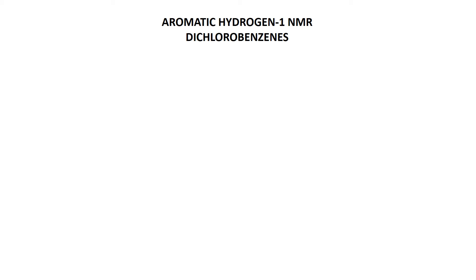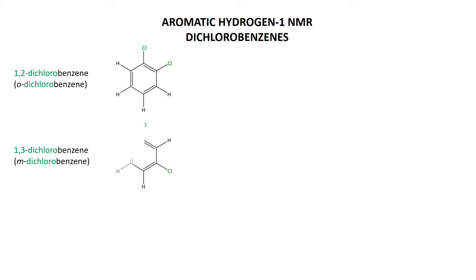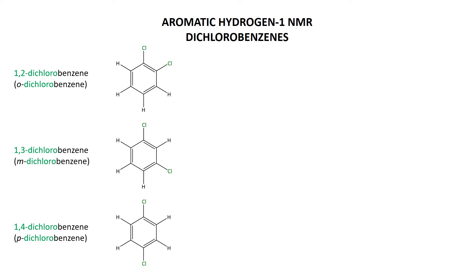Let's think about dichlorobenzene and do some predictions first. You've got 1,2-dichlorobenzene, otherwise known as orthodichlorobenzene. We can also have 1,3 or metadichlorobenzene, and then 1,4 or paradichlorobenzene. So three different isomers. It would be kind of tough to figure out which isomer was which using carbon-13 NMR, so let's see if we can do a better job using proton NMR.